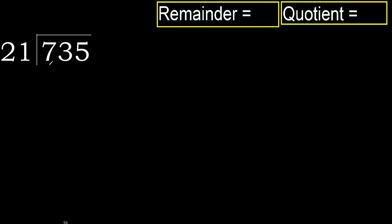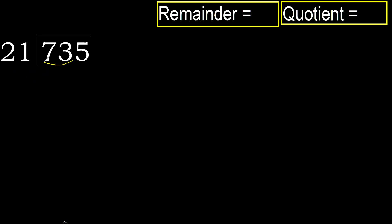735 divided by 21. 7 is less, therefore next. 73 is not less, therefore with 73. 21 multiplied by which number is nearest to 73,